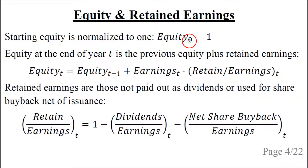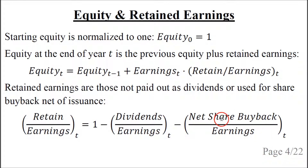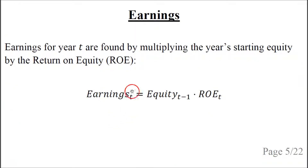We will normalize the starting equity, equity subscript 0, to equal 1. The equity at the end of year t is the equity at the end of the previous year plus the retained earnings — that is, earnings for year t multiplied by the fraction of earnings being retained. The fraction of earnings being retained is defined as 1 minus the fraction paid out as dividends minus the fraction used for share buyback net of share issuance. The earnings for year t are defined as the equity at the end of the previous year t minus 1 multiplied by the return on equity for year t.